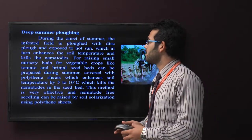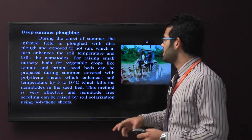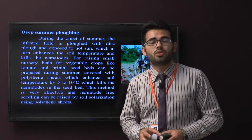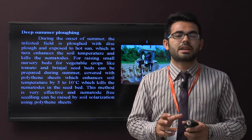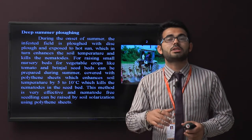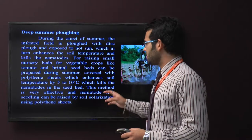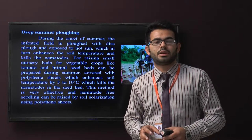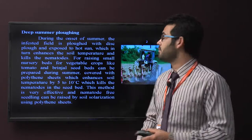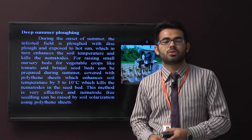For raising small nursery beds for vegetable crops like tomato and brinjal, seed beds can be prepared during summer season and covered with polythene sheets which enhances the soil temperature up to 5 to 10 degrees centigrade, which kills the nematodes in the seed bed. This method is very effective and nematode-free seedlings can be raised by this solarization method.